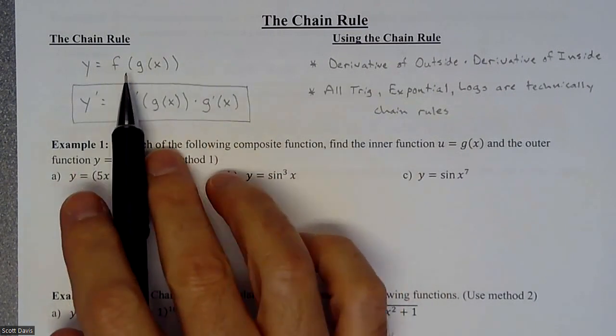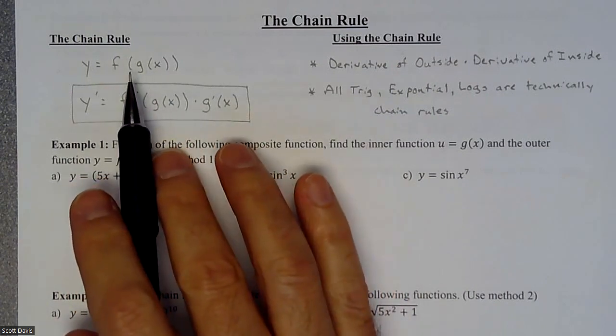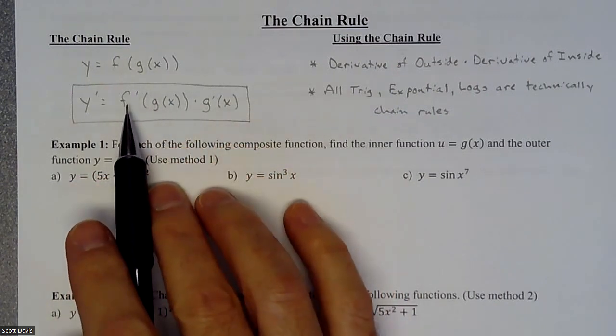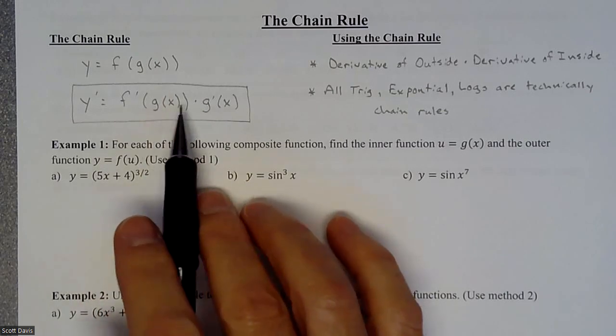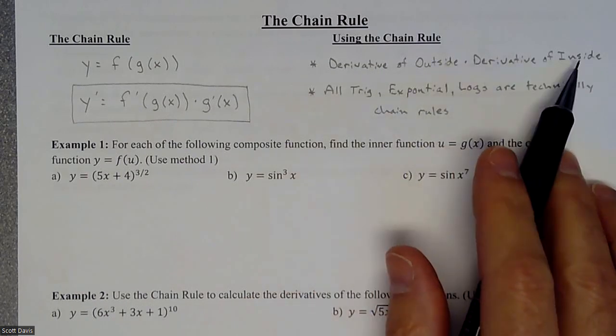First off, the chain rule is when you have a function within a function, so a composition. And so when you're going to do this derivative, you're going to be doing the derivative of the outside, don't change the inside, times the derivative of the inside. So it's derivative of the outside times the derivative of the inside.